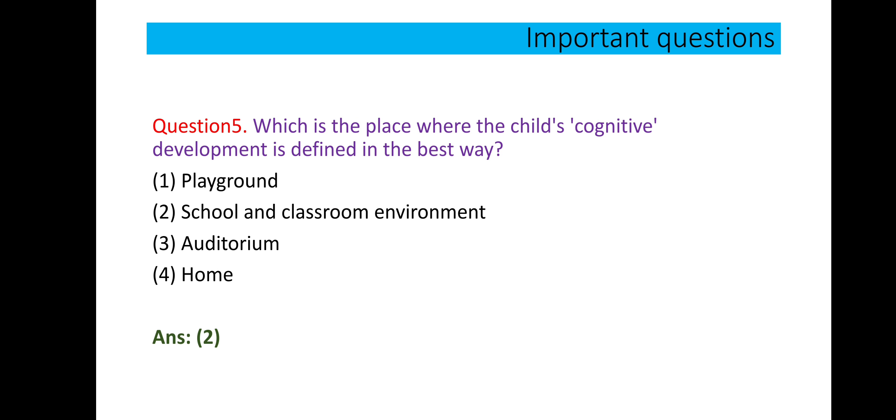Question number 5: which is the place where children's cognitive development is defined in the best way? First option, playground, no. Second is school and classroom environment. School includes everything - playground, auditorium - they are teaching everything. And classroom environment is how the teacher is behaving with the student, how their friends are behaving with the student. So the best place is school and the classroom environment. So option 2 is correct.